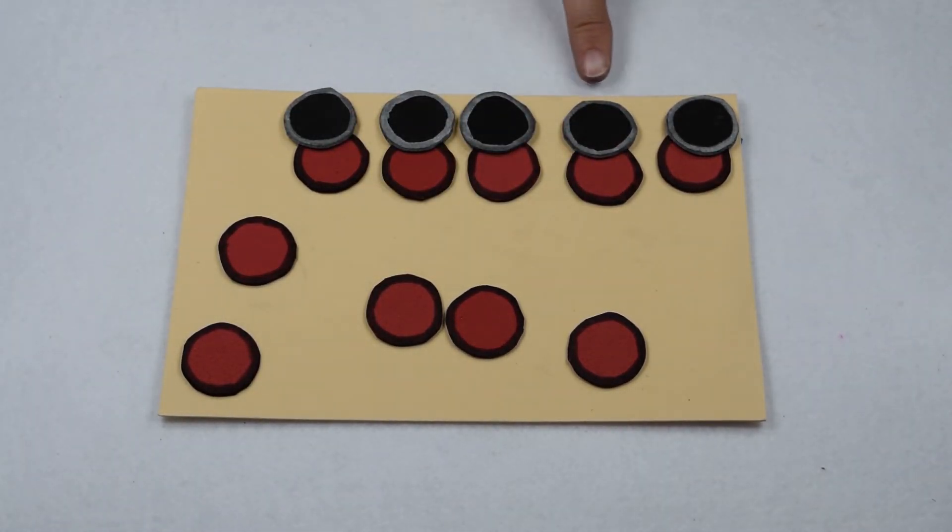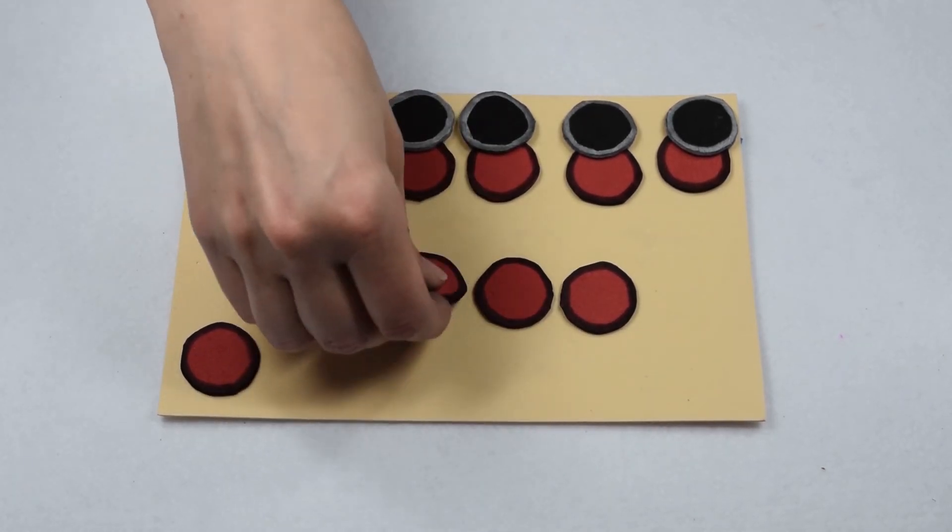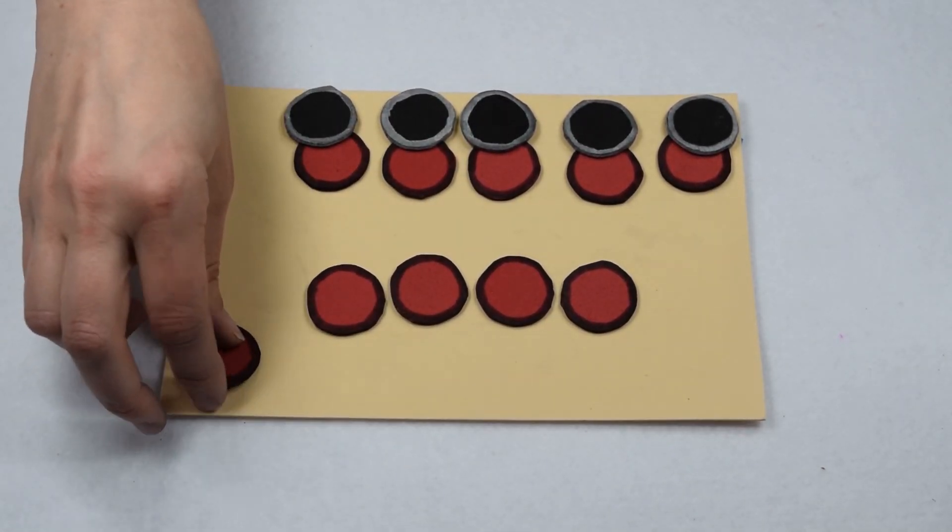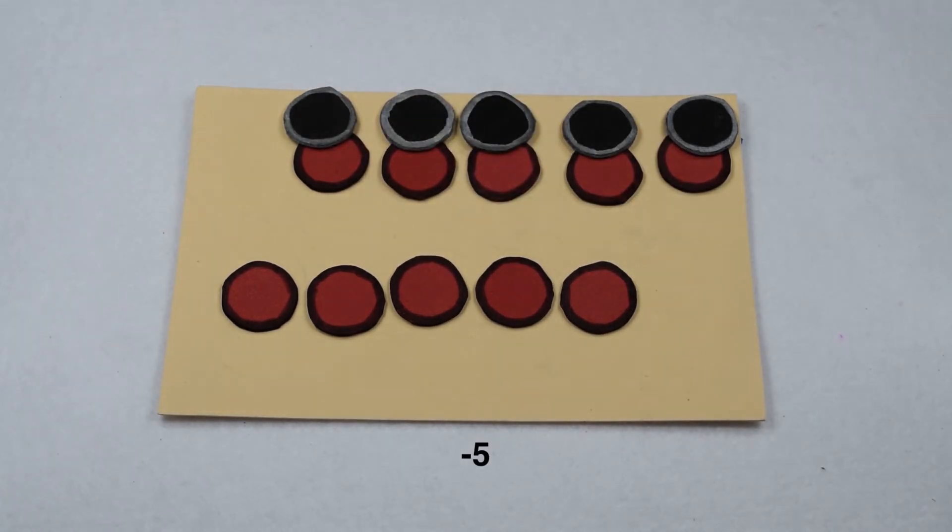When we do that, we can see we have 1, 2, 3, 4, 5, 0 pairs. So together they have a combined value of 0. So it's only our red chips that are left that have value on our board. We have 1, 2, 3, 4, 5 red chips, so this board actually has a value of negative 5.